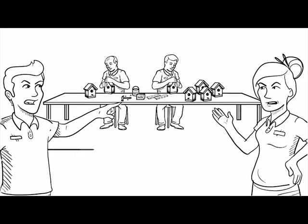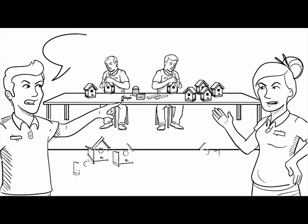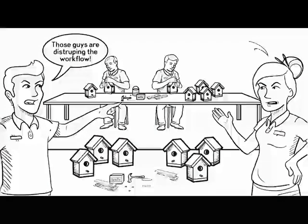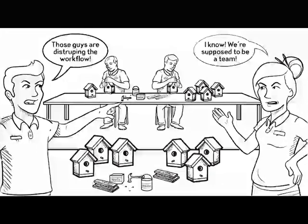They set a productivity level, and workers who produced less or more were looked at unfavorably. This was strong support for the power of group norms.